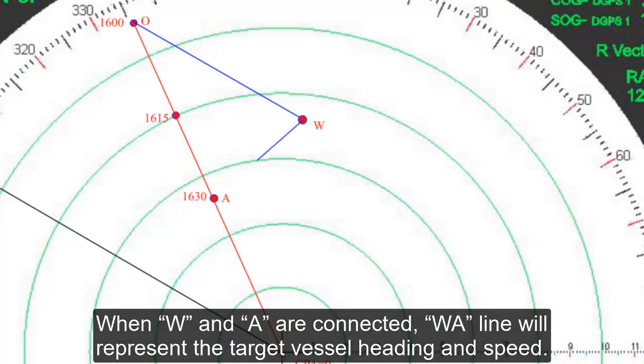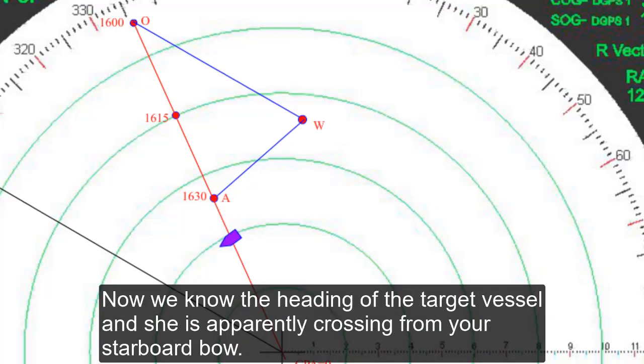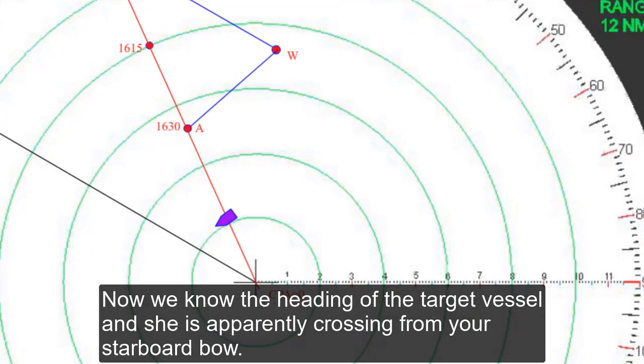When W and A is connected, the WA line will represent the target vessel heading and speed. Now we know the heading of the target vessel, and she is apparently crossing from your starboard bow.